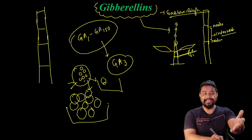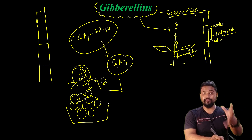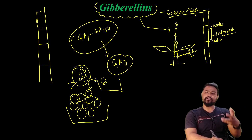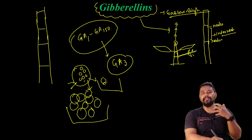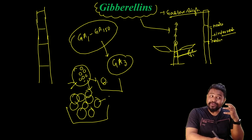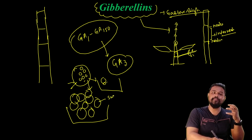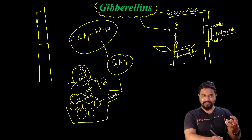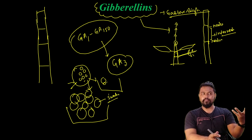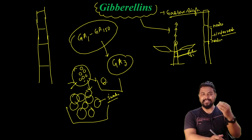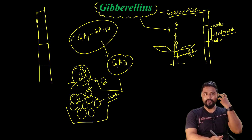High-level Gibberellin hormones are used commercially. The lab application is commercially very important, and the food produced is very large. Gibberellin helps increase the size of fruits.